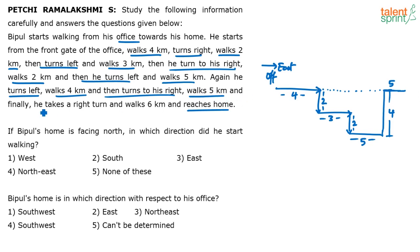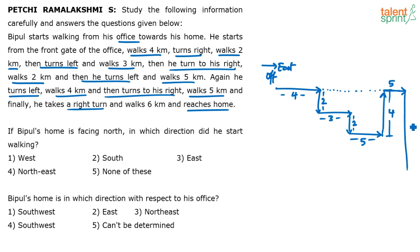Then he turns to his right — when going north, right is towards the east — and walks 5 kilometers. Finally he takes a right turn. When going east, a right turn means towards the south, and he walks 6 kilometers to reach home. He is going towards east, takes the right turn meaning south, walks 6 kilometers — he crosses the earlier 4 kilometers and comes down 6 kilometers vertically to reach home.